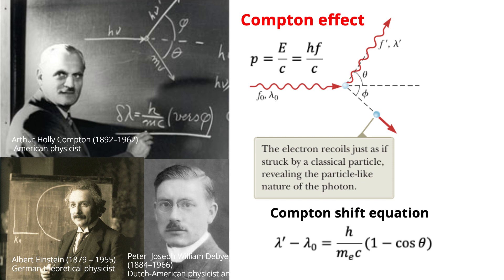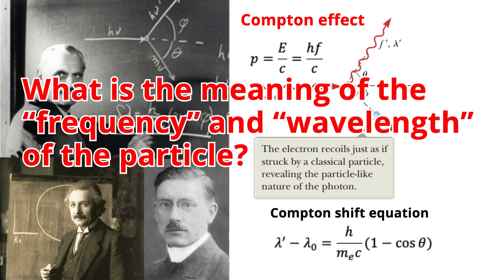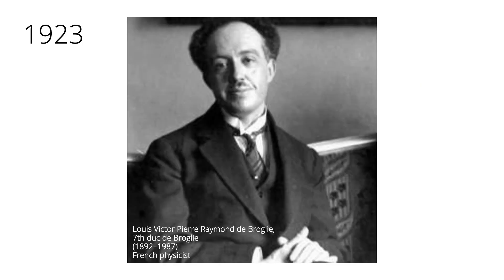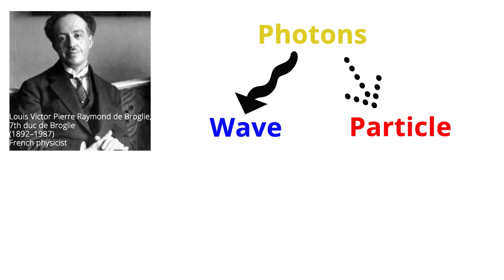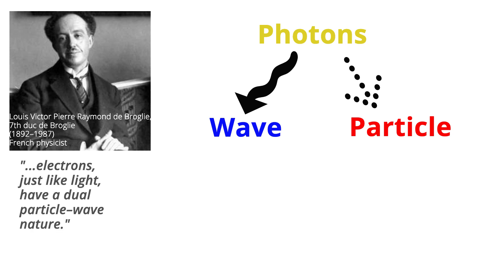The success of the particle model of light in explaining the photoelectric effect and the Compton effect raises many other questions. If light is a particle, what is the meaning of the frequency and wavelength of the particle, and which of these two properties determine its energy and momentum? And many more consequent questions were raised. In 1923, Louis de Broglie postulated that because photons have both wave and particle characteristics, perhaps all forms of matter have both properties. This highly revolutionary idea had no experimental confirmation at the time. According to de Broglie, electrons, just like light, have a dual particle-wave nature. De Broglie suggested that material particles of momentum p have a characteristic wavelength that is given by the same expression.